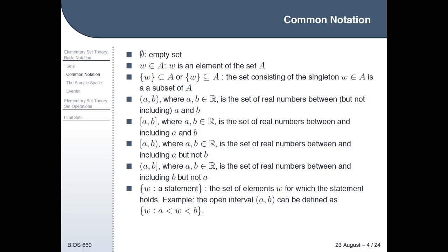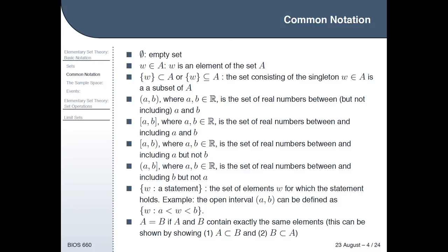Sometimes you can use set-builder notation where you write curly brackets with W colon and some statement describing the elements. For example, {W : A < W < B} would be equivalent to the open interval (A, B), meaning all W such that W is between A and B. Two sets are defined to be equal if they contain exactly the same elements, and in proofs you can show two sets are equal by showing they are subsets of one another — if A is a subset of B and B is a subset of A, then A and B are equal.